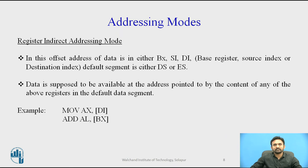Now moving to register indirect addressing mode, where most 8086 instructions can operate on the general purpose register set by specifying the name of the register as an operand. You may access the contents of the register — in this mode the offset address of data is in either BX, SI, or DI. The default segment is either DS or ES. For example: MOV AX, [DI] or ADD AL, [BX]. These instructions copy the data from the source operand to the destination operand.